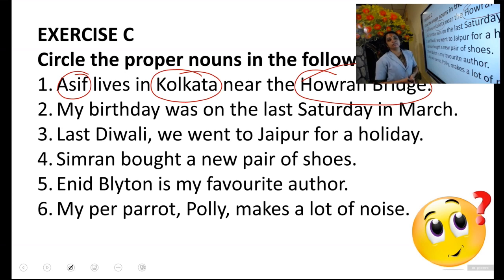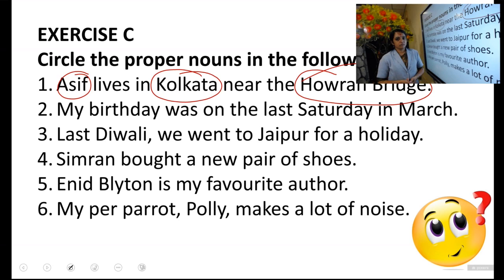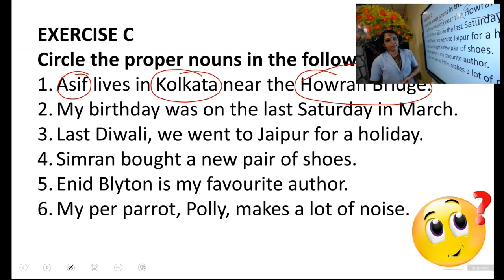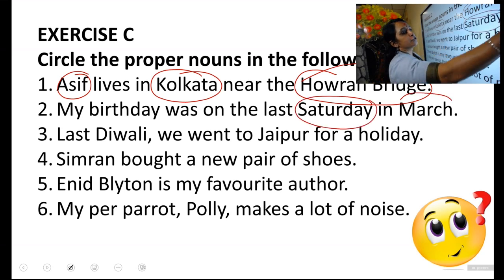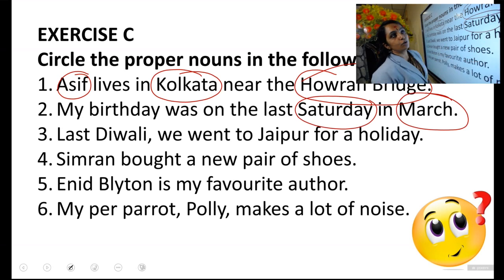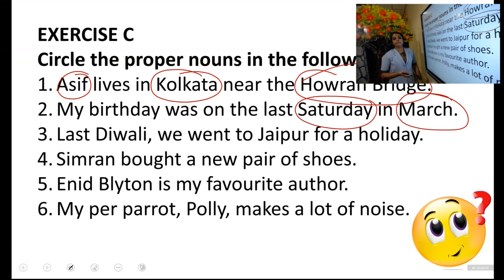Now the second one: My birthday was on the last Saturday in March. We have two proper nouns — Saturday, which is a day of the week, and March, the name of a month. Circle Saturday and March. So Saturday and March are proper nouns.